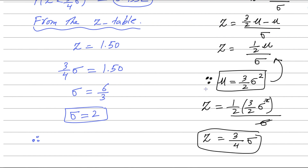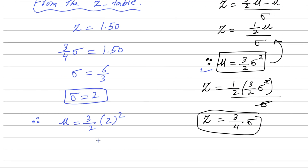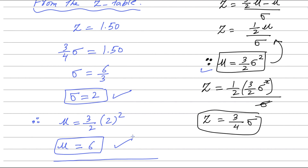Now substituting sigma equals 2 back into mu equals 3 over 2 sigma squared: mu equals 3 over 2 times 2 squared, which is 3 over 2 times 4 equals 12 divided by 2, so mu equals 6. We have found sigma equals 2 and mean equals 6. This completes question number 8. If you have any questions, ask in the comment box. Thank you so much.